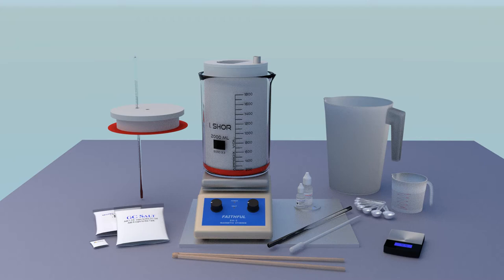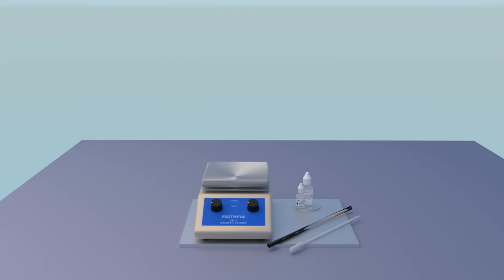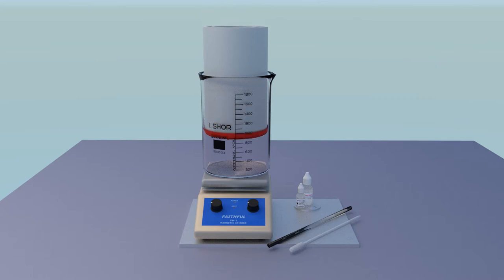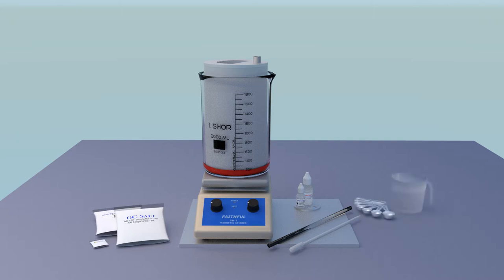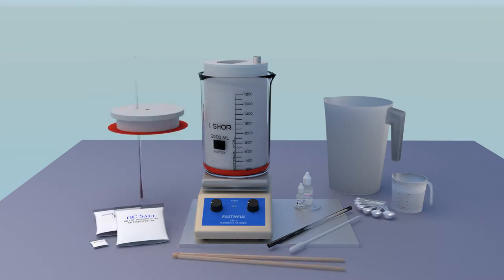However, before we begin, let's go over the parts that come with the system. Parts include: workstation with spot plate, precious metal test solution, ammonia test solution, pipette, stirring rod, hot plate magnetic stirrer, beaker, core, filter pouch, spin bar assembly, cathode cap with cathode, quadratic precipitant, GC salt, catalyst, measuring spoons, measuring cup, pitcher, tongs, precipitation cap, thermometer, and electronic scale.